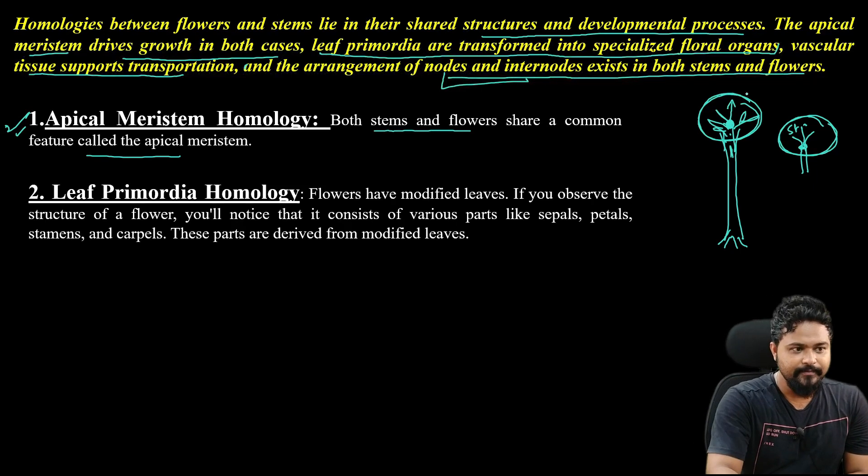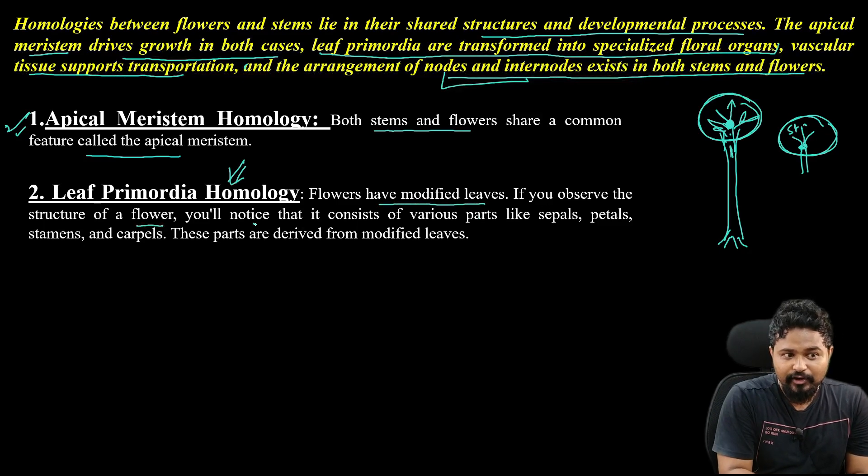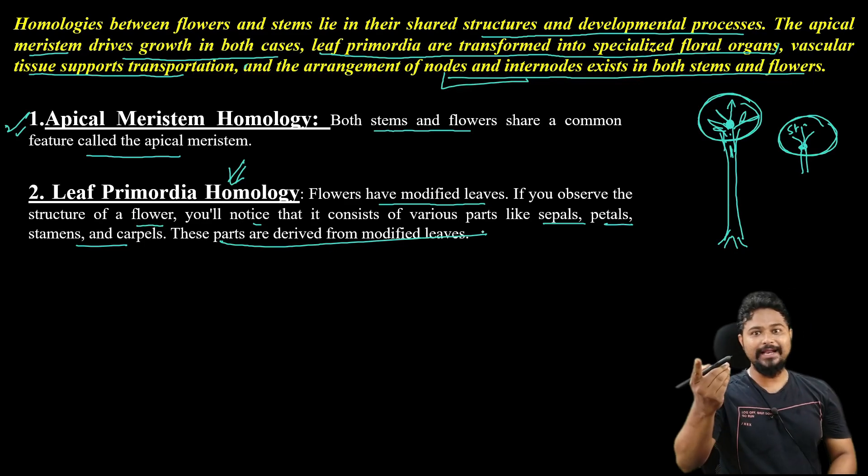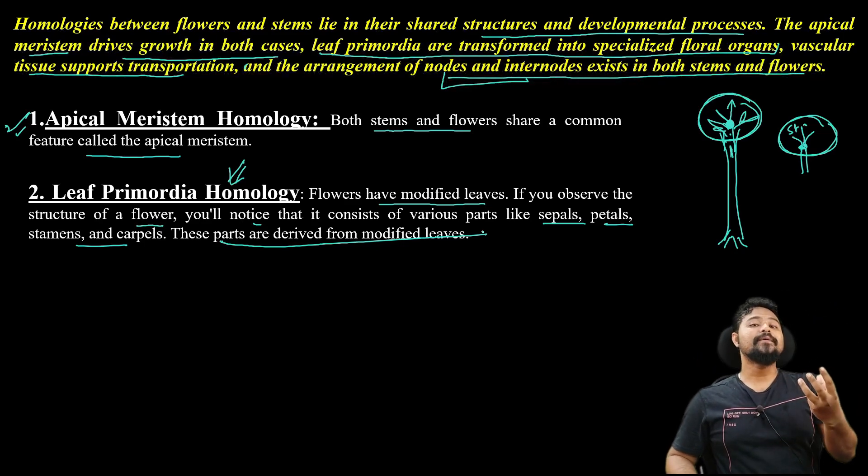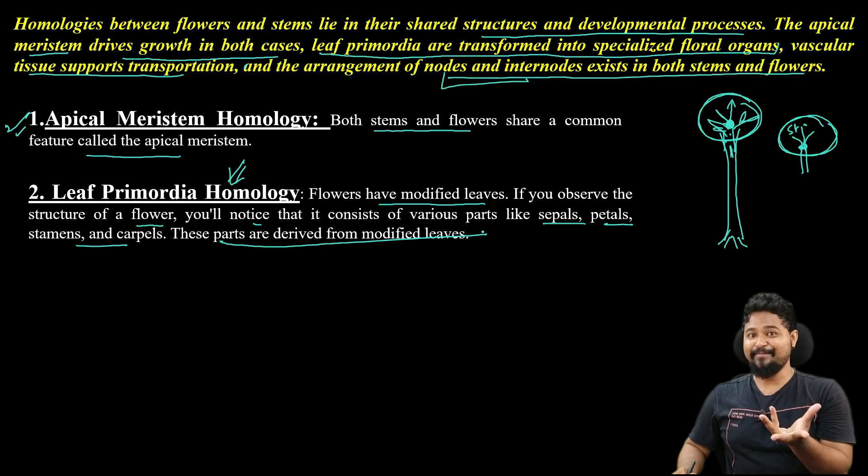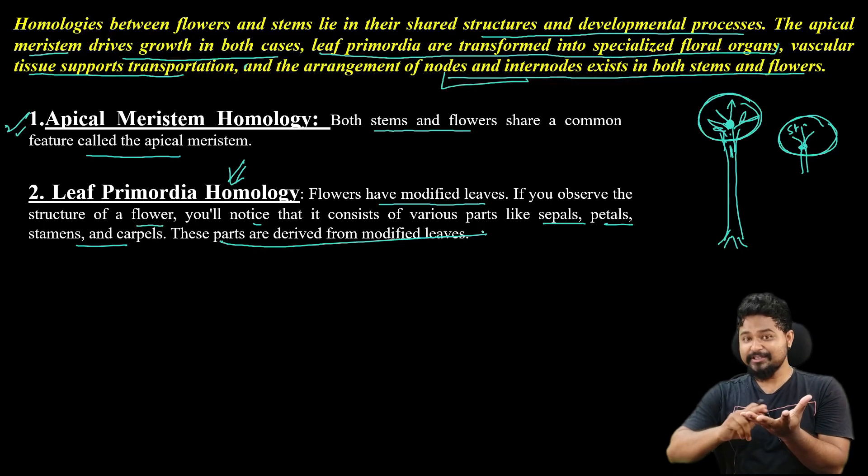Second: leaf primordia homology. Flowers have modified leaves. If you observe the structure of a flower, you will notice that it consists of various parts like sepals, petals, stamens and carpels. These parts are derived from modified leaves.